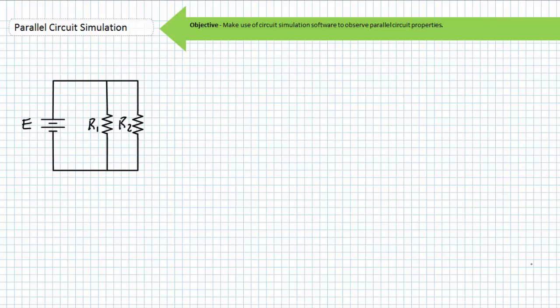Our first task is to use a simulator to build a basic parallel circuit consisting of a single source and two resistors in a parallel combination. In this case, we'll use a 12 volt source with R1 as a 200 ohm resistor and R2 as a 400 ohm resistor. To belabor the point that voltage across components hooked in parallel is the same, we'll employ two voltmeters — one to measure voltage across R1 and the other to measure voltage across R2.